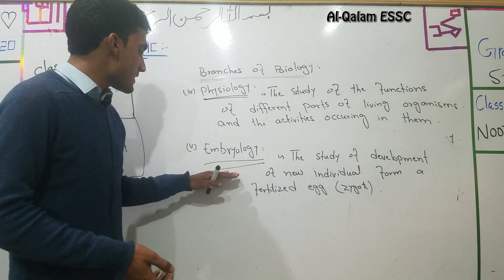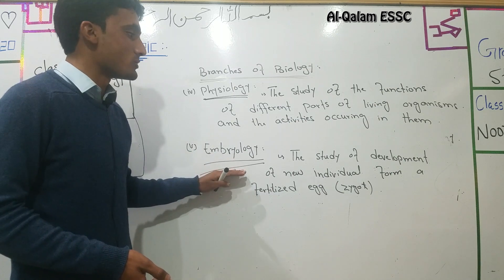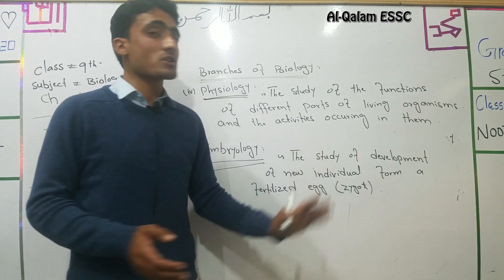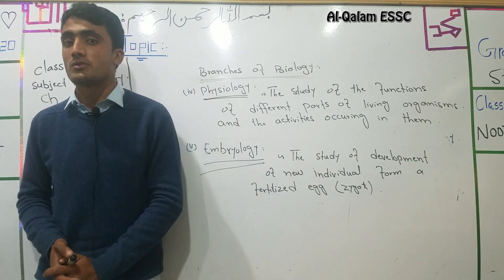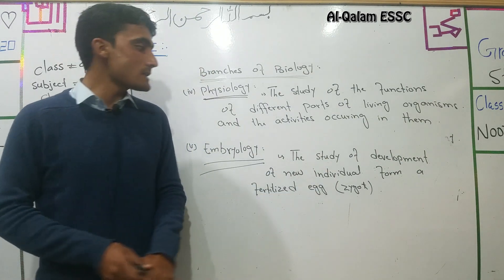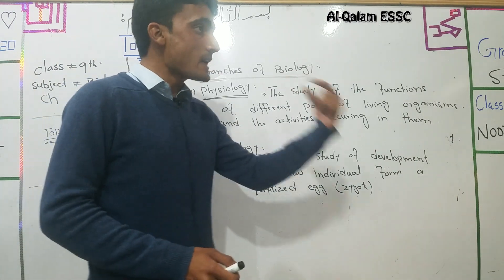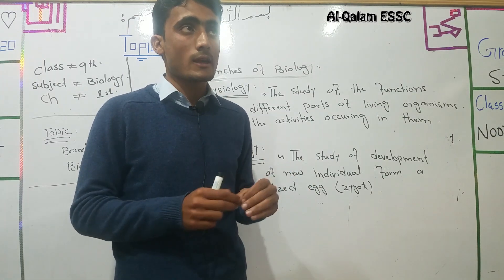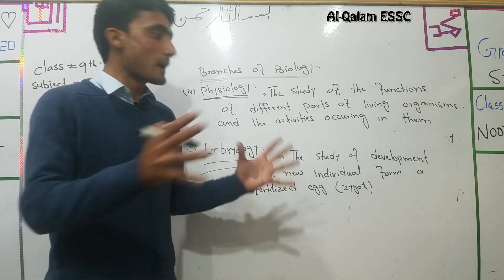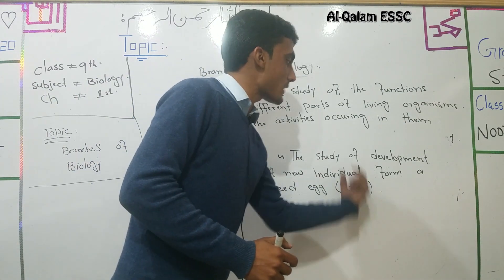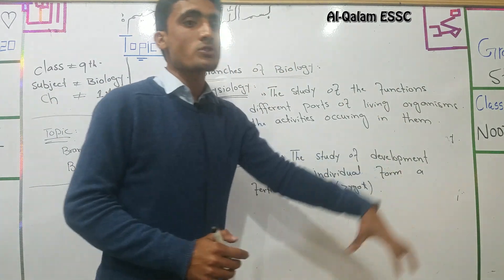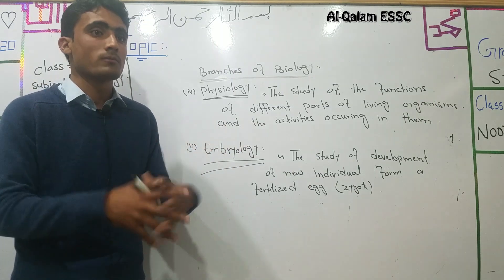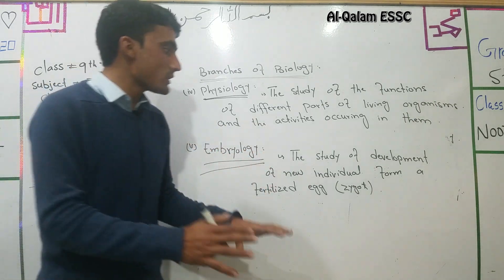Branch number five is Embryology — the study of the embryo is called embryology. A fertilized egg from the female, combined with the male sperm, forms a zygote. The zygote then develops into an embryo, and the embryo further develops into a new baby in living things, mostly in animals.